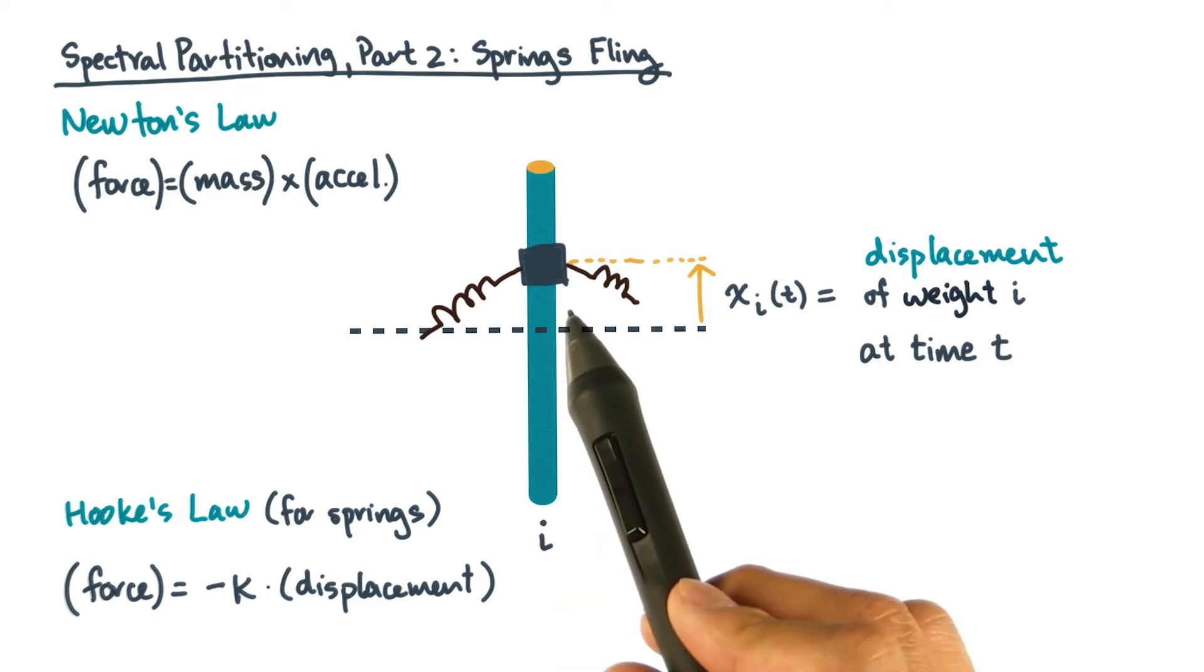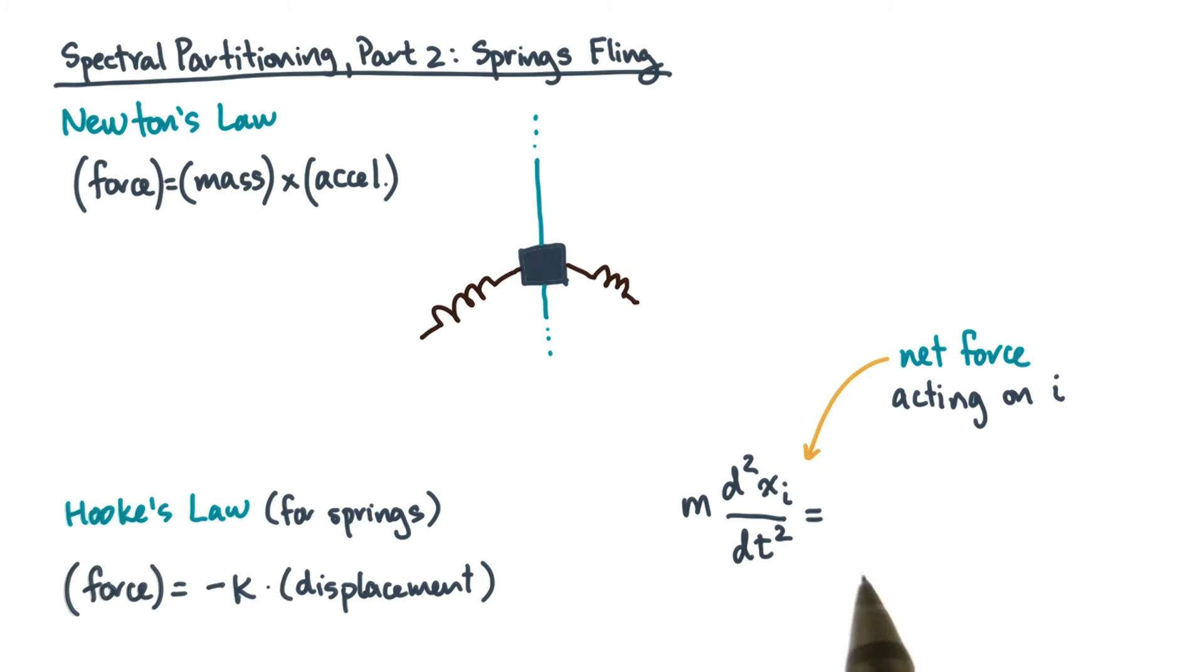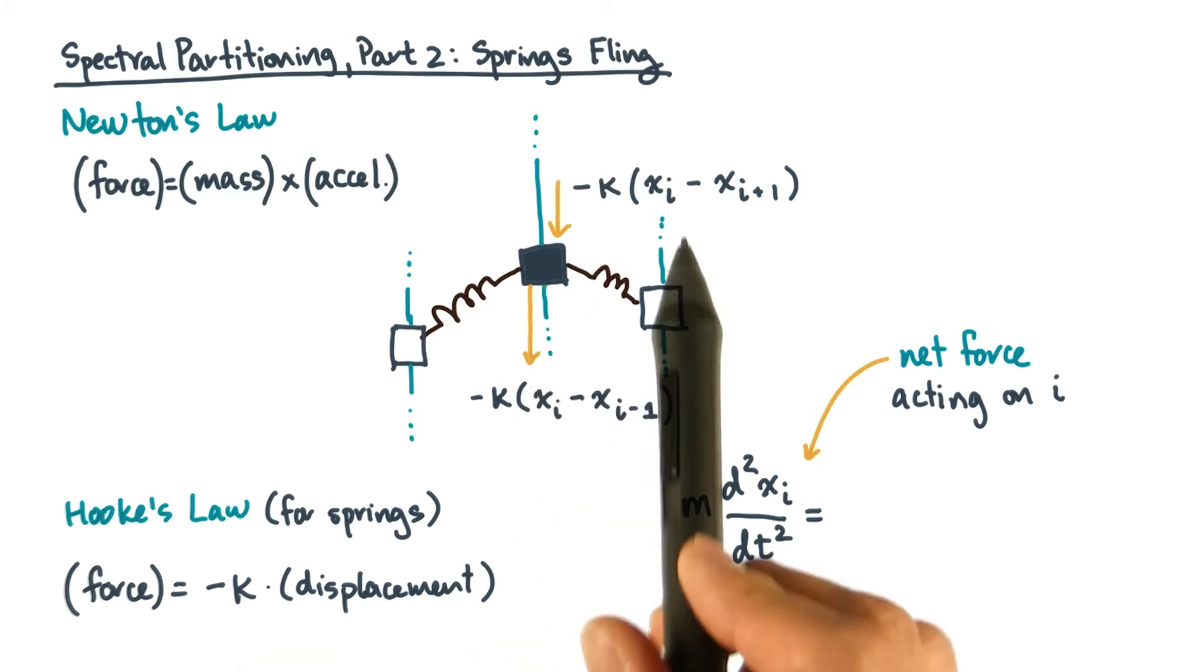So let's go back to this i-th weight. Its motion is determined by the net force acting on it. By Hooke's Law, that force will depend on how much the springs are being stretched. In fact, each spring will be stretched by the difference between the displacements of the masses.